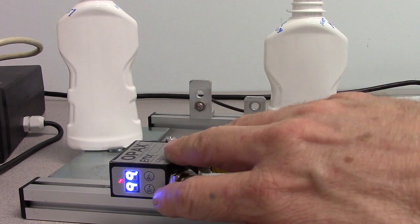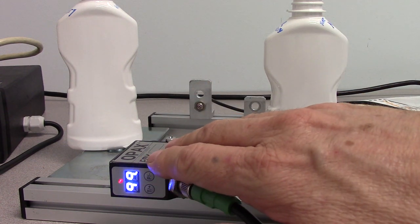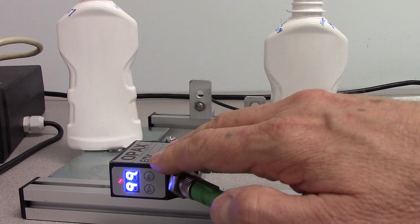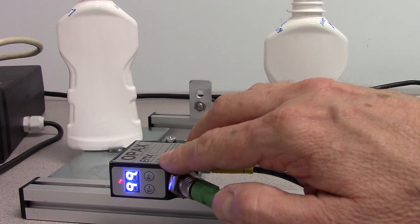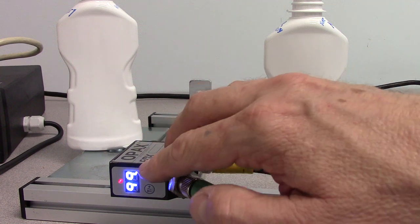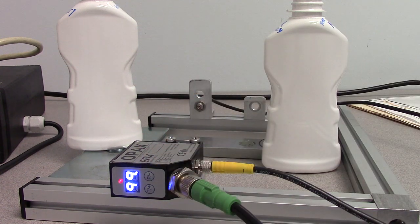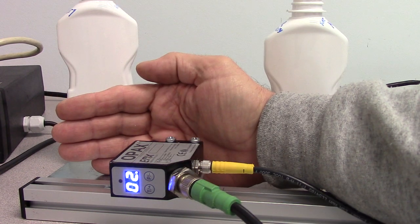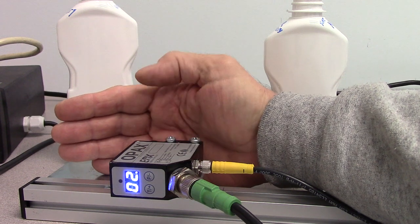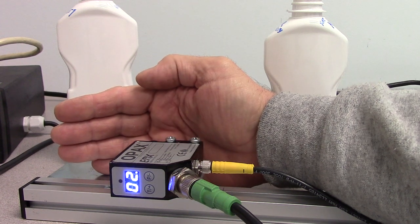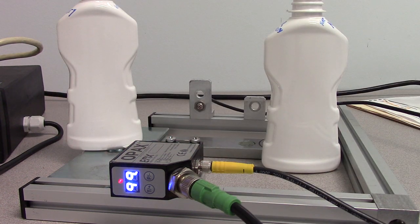The sensor also features a discrete output, NPN or PNP, which is automatically selected. The discrete output triggers when the signal level exceeds a threshold. As I block the light, you see the red LED on the sensor goes out and the discrete output is off. As I allow the signal to go above the threshold, the discrete output turns on.